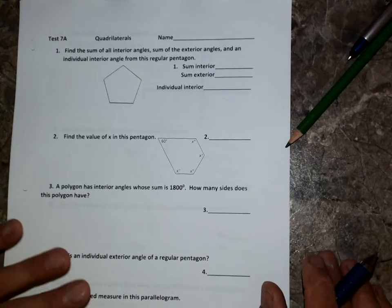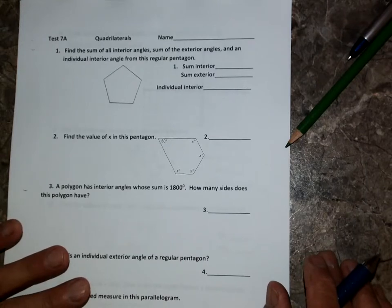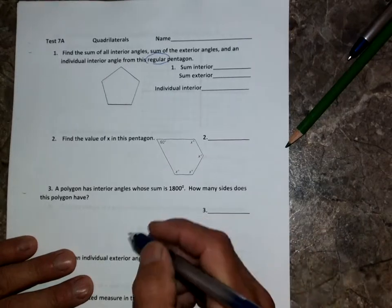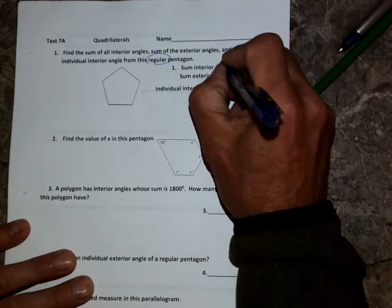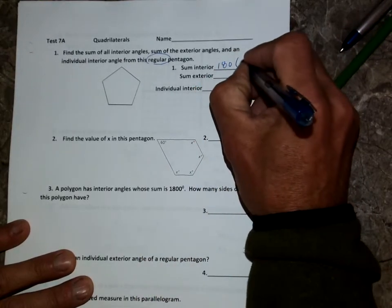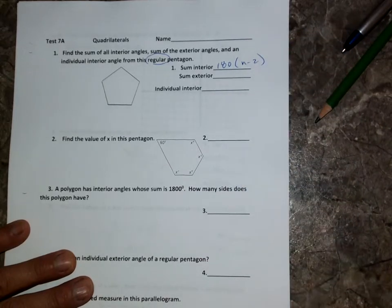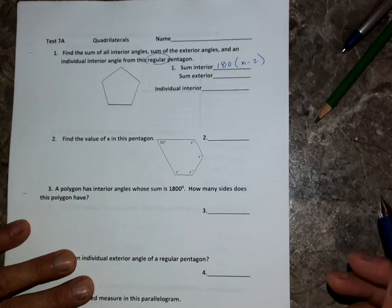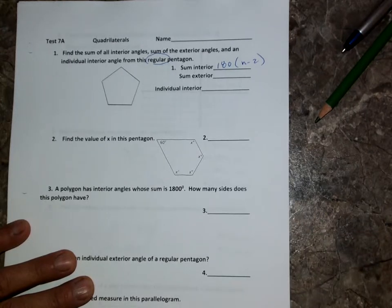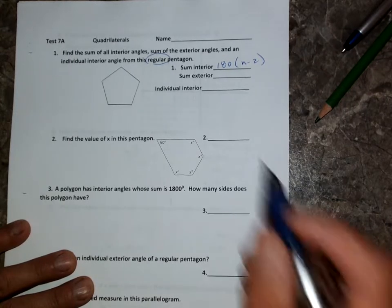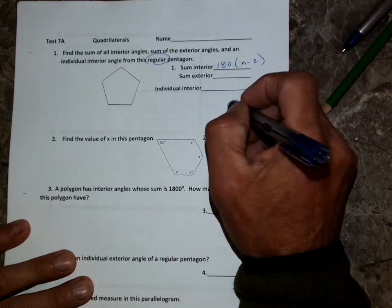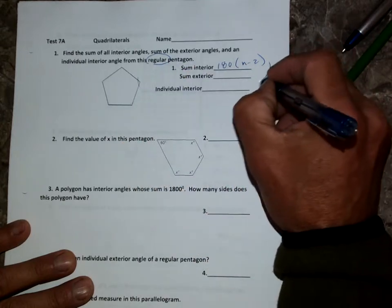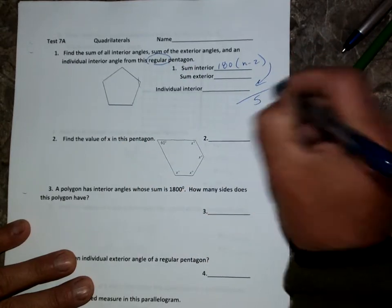So first of all, in number one, we know that it is a regular pentagon, and that helps us out quite a bit. So sum of the interior angles, we want to use the formula 180 times n minus two, and you know the n is the number of sides. Exterior angles, it's always 360, no matter what it is. Individual interior angle, you take the answer to one, whatever that answer is, and since there's five, you take this answer here and divide it by five.